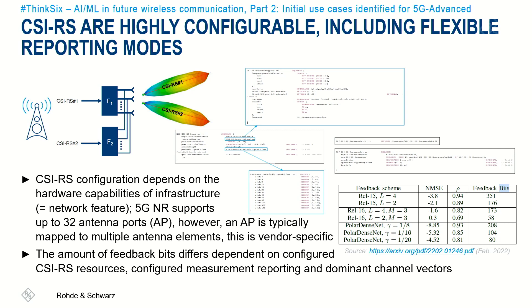Let us discuss one of these use cases in more detail. Those familiar with 5G new radio know that the UE estimates the downlink channel quality based on so-called channel state information reference signals, short CSIRS. The UE executes channel estimation measurements on those reference signals, such as reference signal receive power (RSRP), reference signal receive quality (RSRQ), and reference signal interference-to-noise ratio. The estimated SINR is translated to channel quality indicator (CQI).